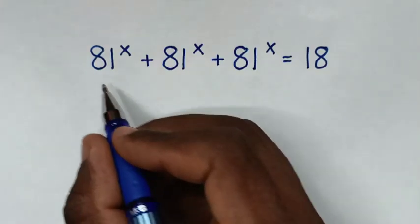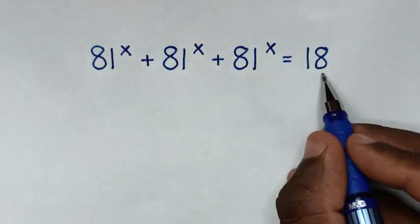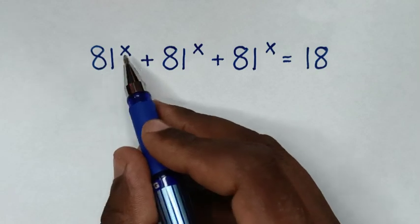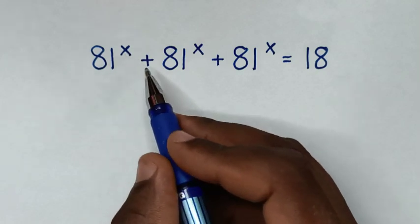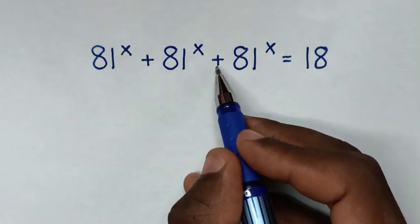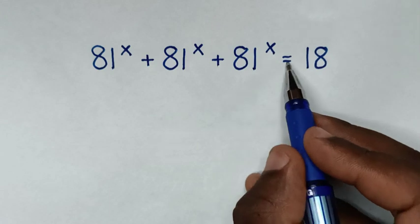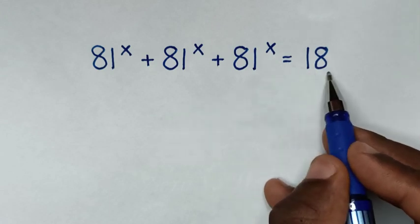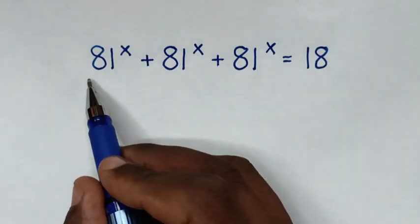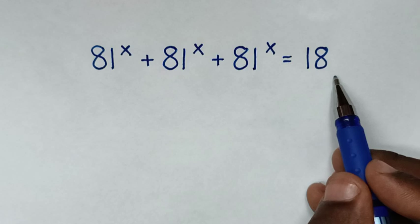Hello, you are welcome to solve this math problem, which is 81^x plus 81^x plus 81^x is equal to 18, to find the value of x from this equation.